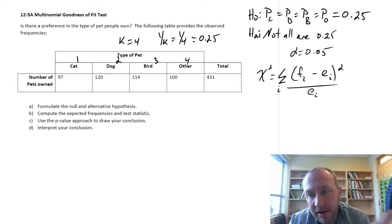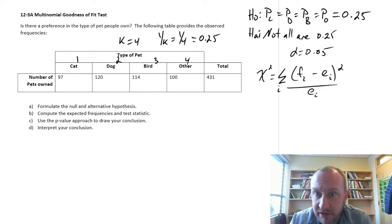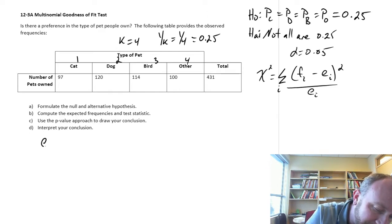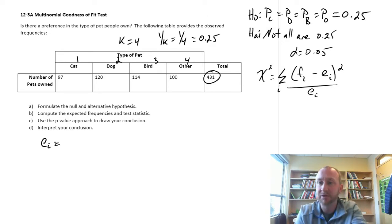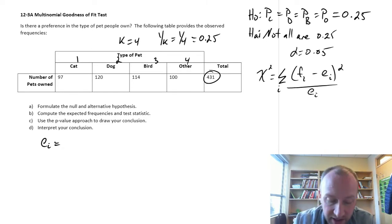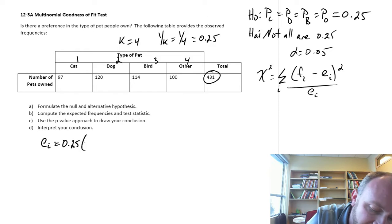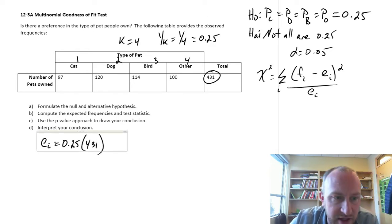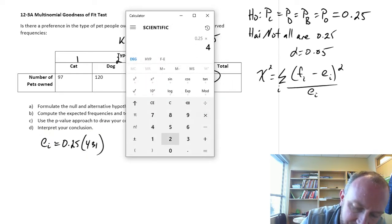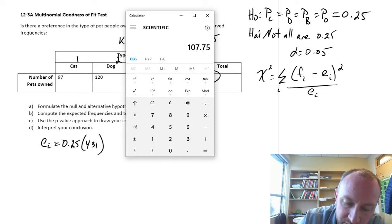First thing that we need to do, the same as always, is calculate our expected frequencies. Now, here it's a little bit easier than what we had done before. We have a common proportion estimate here of 0.25. We expect that a quarter of our sample will like a cat, a quarter the dog, a quarter the bird. To calculate those expected frequencies, well, we have 431 people that we spoke to. If our null hypothesis is true, we would expect cat, dog, bird, and other, they would all be equal, and they would all be equal to a quarter of that total. So all of those expected frequencies, they're all going to be the same, and they'll all be equal to 0.25 times 431.